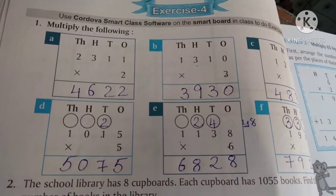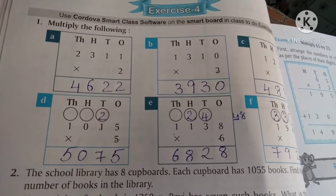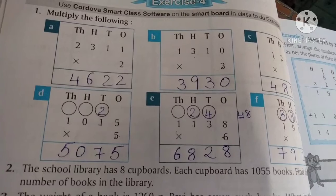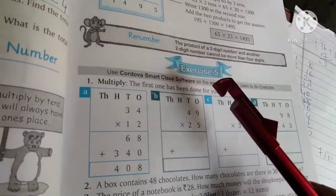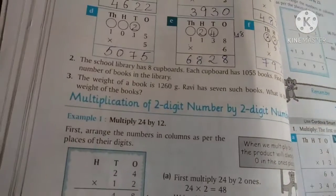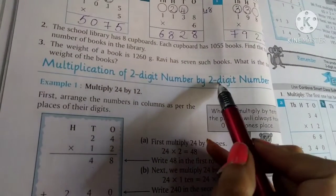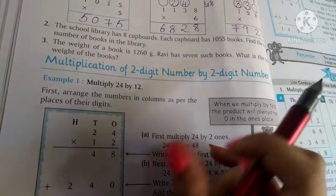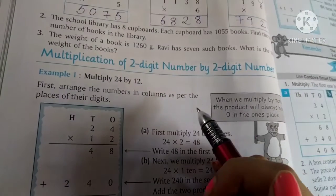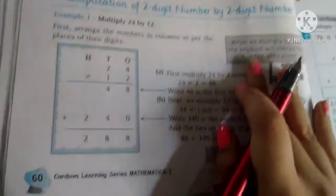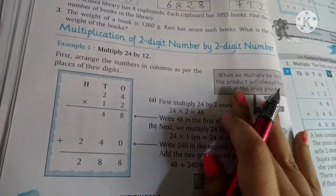Good morning, in maths, in our last lecture we have completed exercise 4. So before we are going to start exercise 5, let's see examples. Multiplication of 2-digit number by 2-digit number.